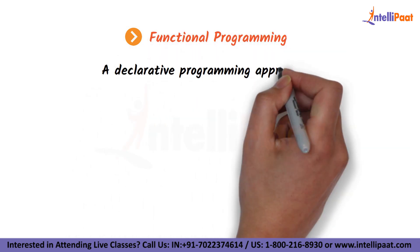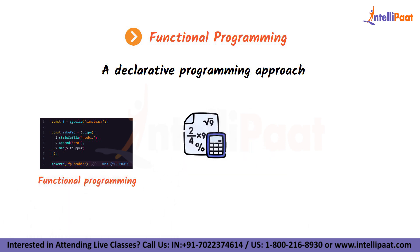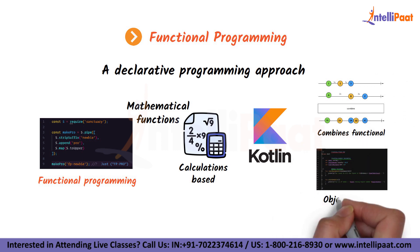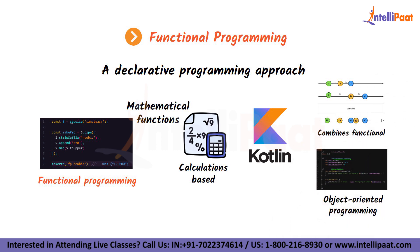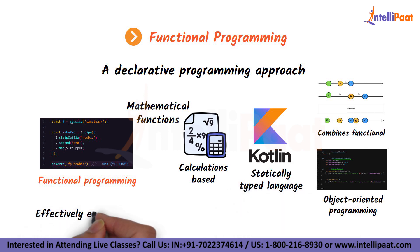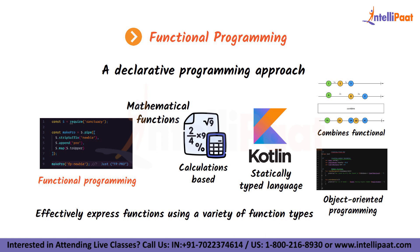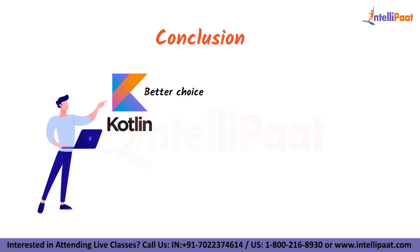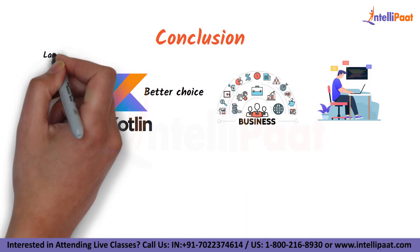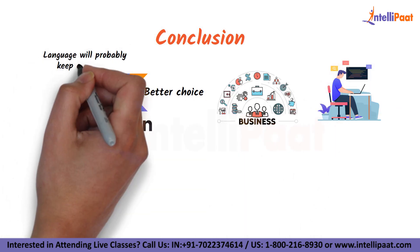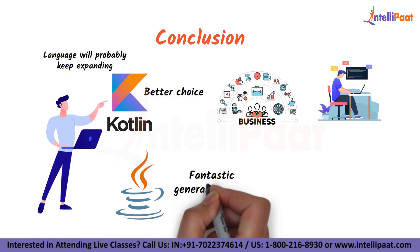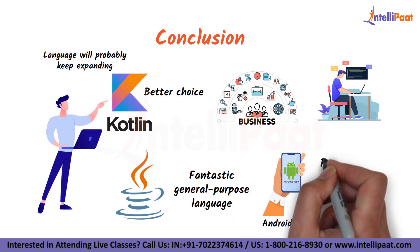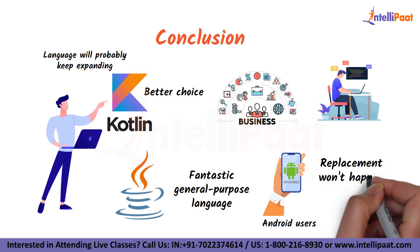Our last parameter is functional programming. A decorative programming approach known as functional programming handles calculations based on mathematical functions. Kotlin combines functional and object-oriented programming. As a result, Kotlin, a statically typed language, may effectively express functions using a variety of function types. All in all, Kotlin currently seems to be the better choice. It is being used by plenty of businesses and developers and the language will probably keep expanding. Java is still a fantastic general-purpose language though, and it has been a popular language among Android users, so its replacement won't happen just away.